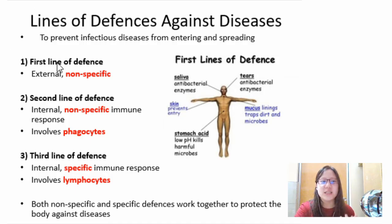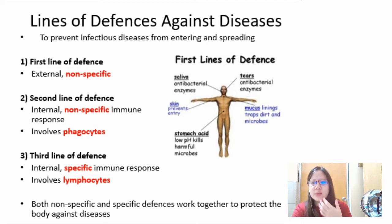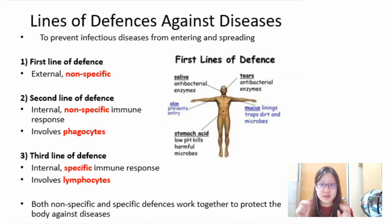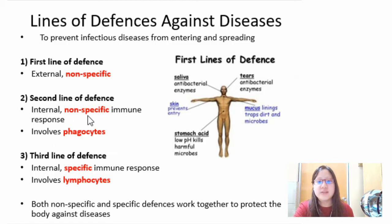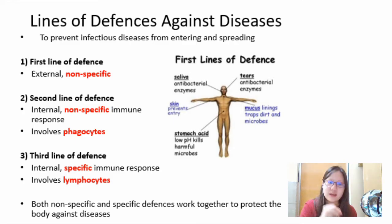The first line of defense is external — this includes saliva, tears, skin, mucus, and stomach acid. These are all non-specific mechanisms, meaning they are not targeted at a particular pathogen; they act as a general barrier. The second line of defense is internal, mostly involving phagocytes, and is also non-specific. If the pathogen survives that, the third line of defense is a specific immune response involving lymphocytes, specially targeted at particular pathogens.